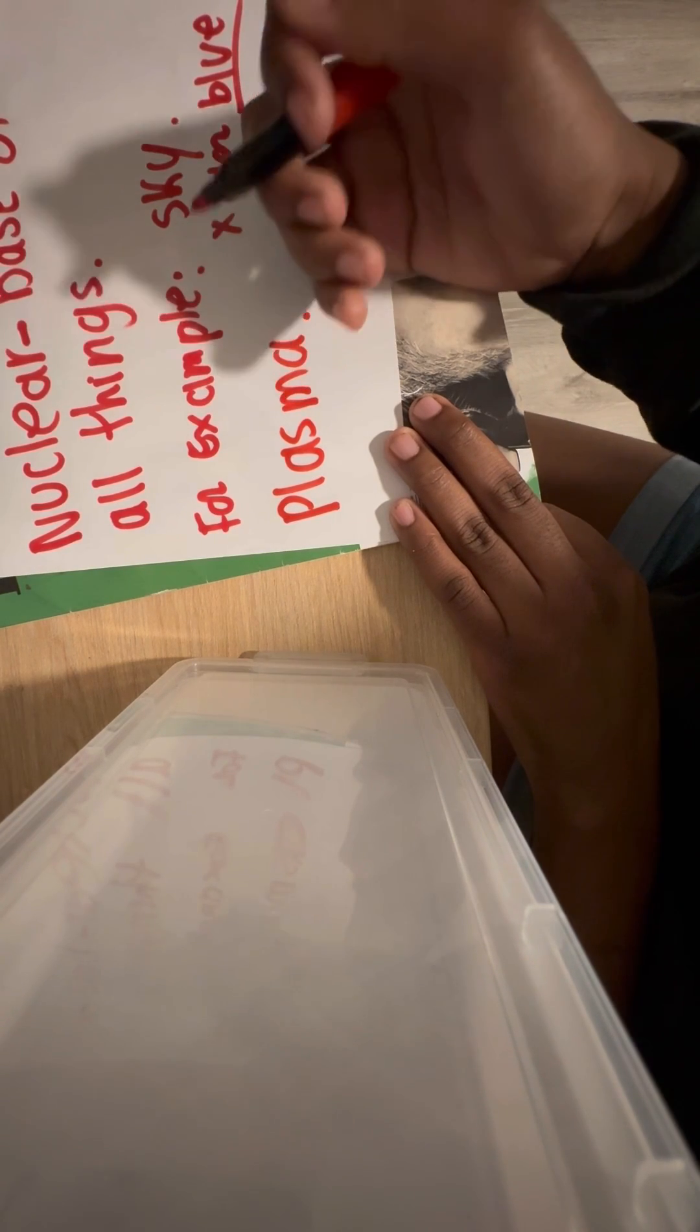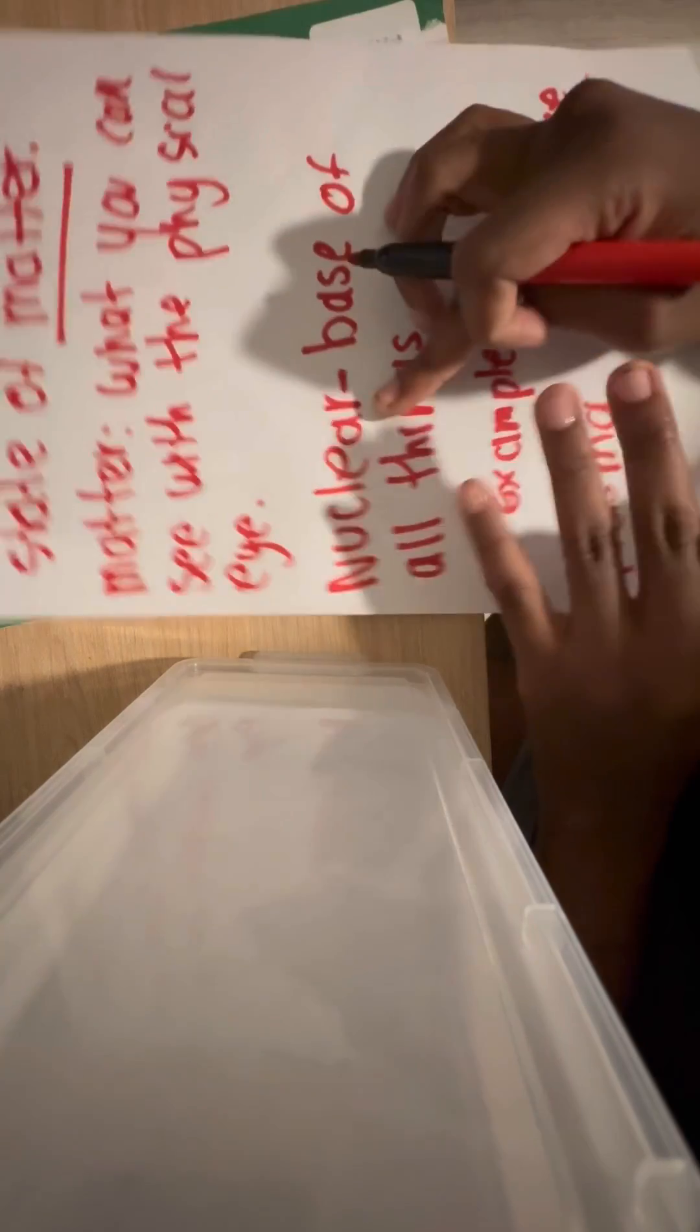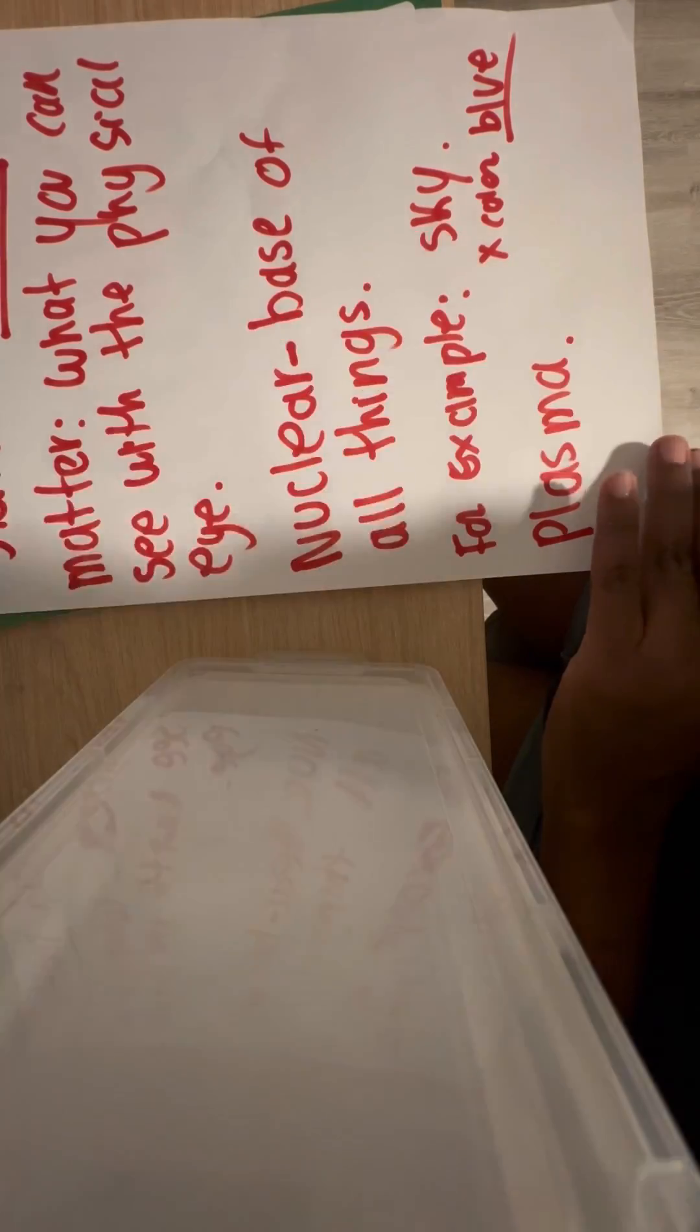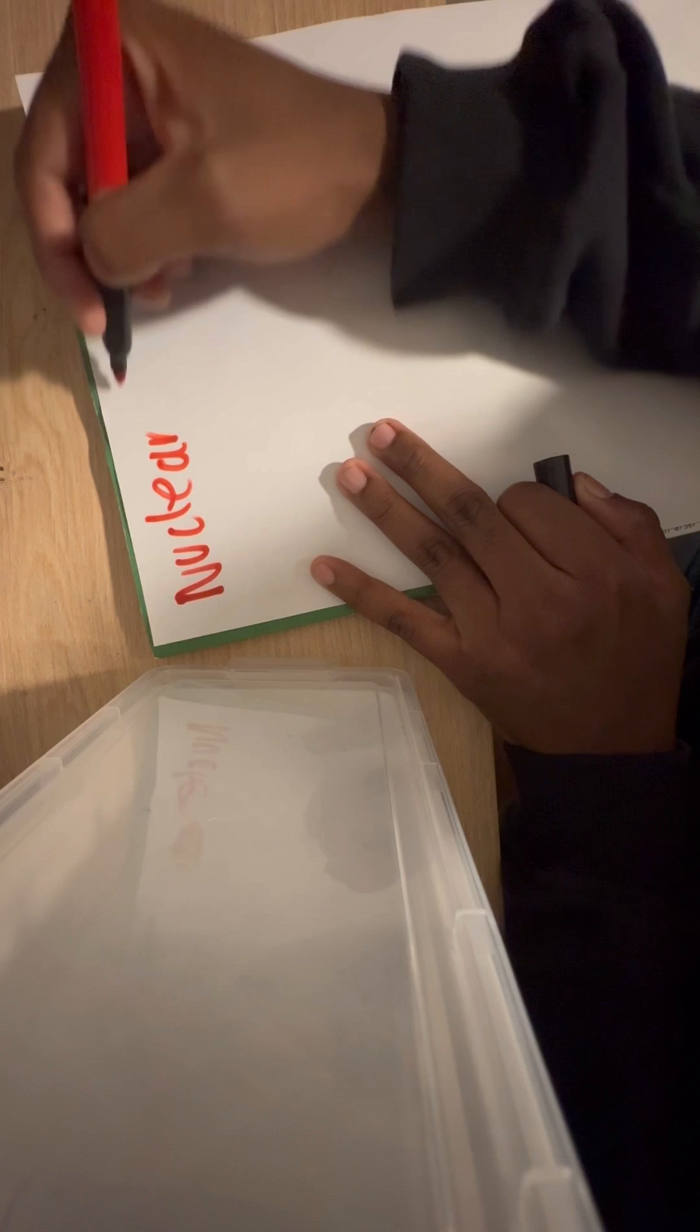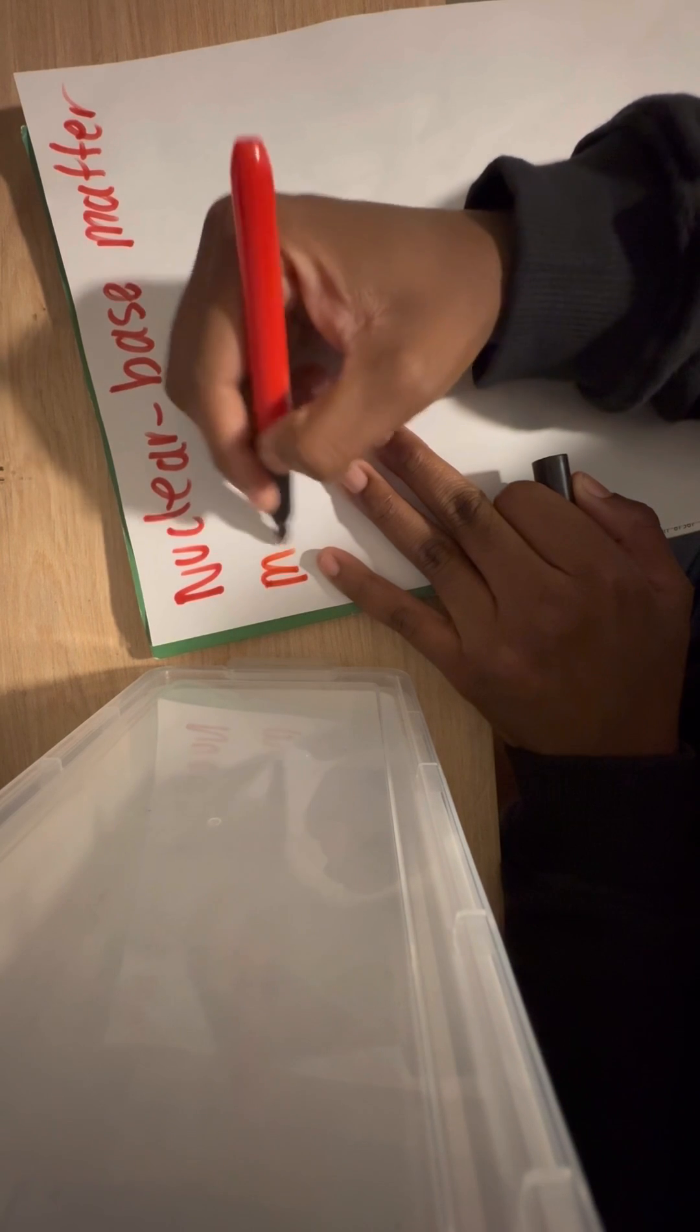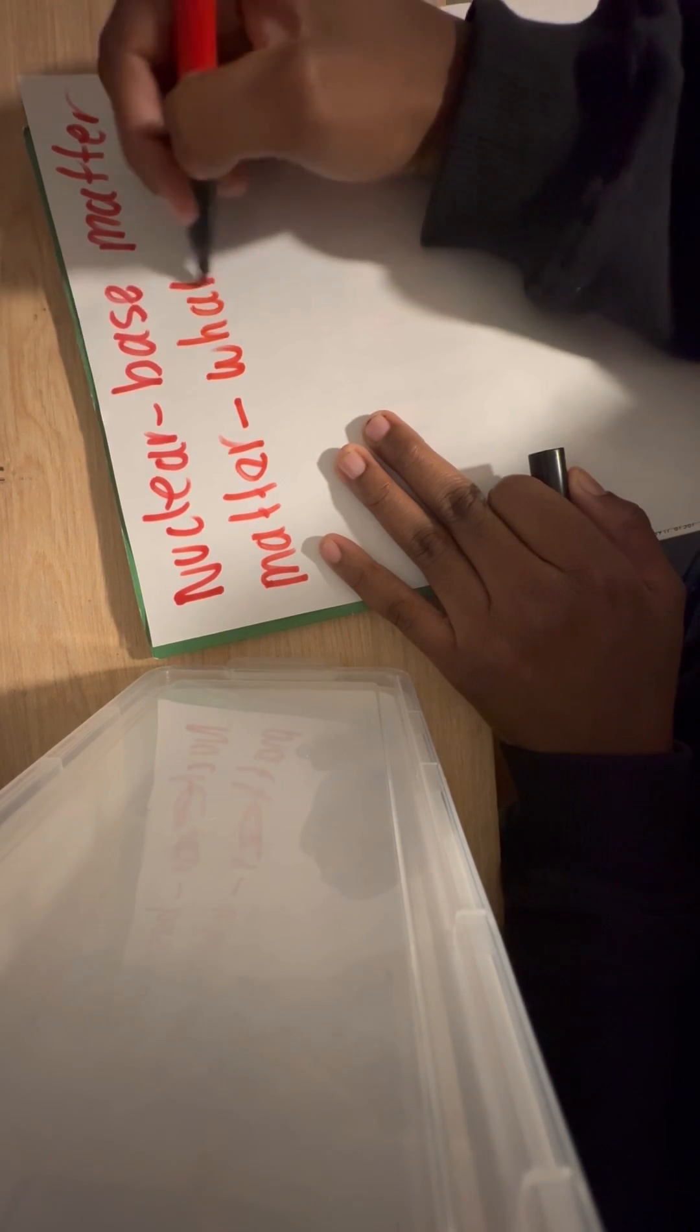Plasma makes nuclear a matter. That means you are able to see it with your physical eye. Nuclear is the base for matter. Matter is what you can see.